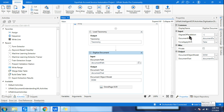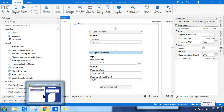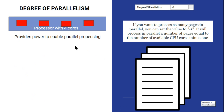To understand this specific option, we first have to understand logical processors. For example, imagine a processor with four cores — a quad-core. One processor with four different cores.